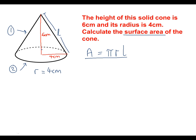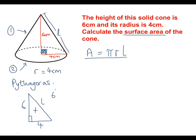The way we work out L is by making it into a right-angled triangle. We're looking for the longest side, so we use Pythagoras. The triangle is 6 up and 4 across. So we do 6 squared add 4 squared, which is 36 add 16, which equals 52. We then take the square root of 52, which gives us 7.2 centimetres. So the slant length L is 7.2 centimetres.